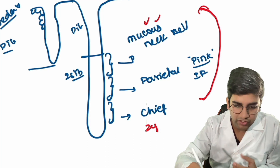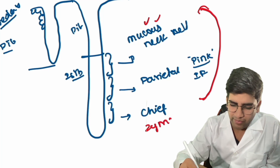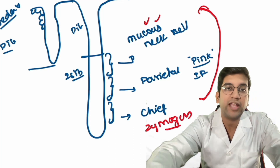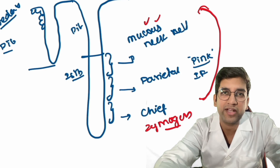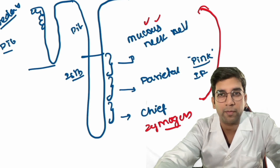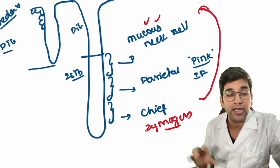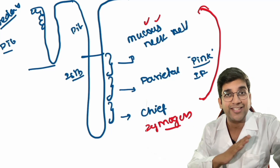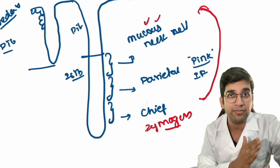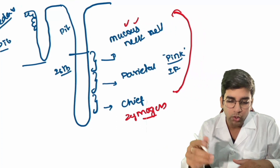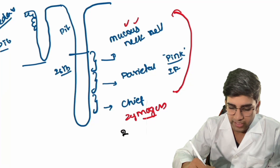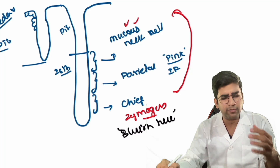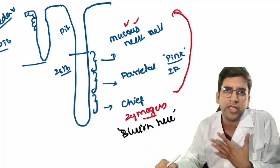Chief cells have zymogen granules — zymogen meaning precursor proteins. So these cells contain pepsinogen, not pepsin. Anything which is zymogen, containing precursor proteins, will have a blue hue — not extremely hematoxylic, not extremely eosinophilic — we call it an amphophilic cytoplasm. The cytoplasm here will have a blue hue, similar to the zymogen of the salivary gland or pancreas.